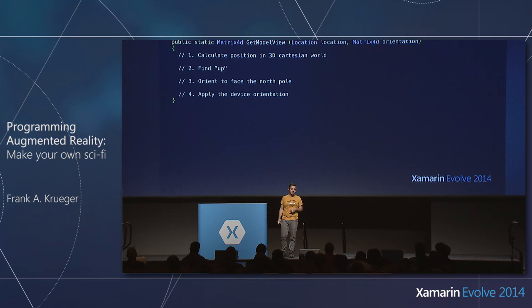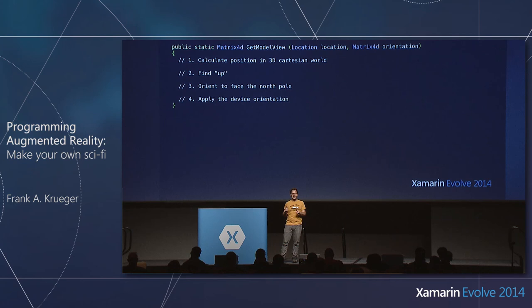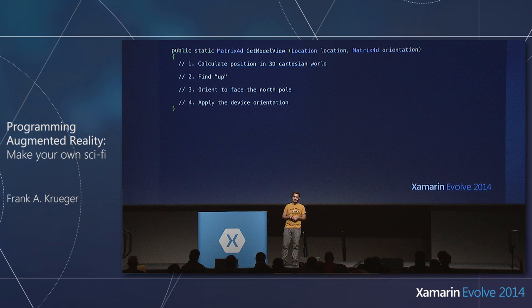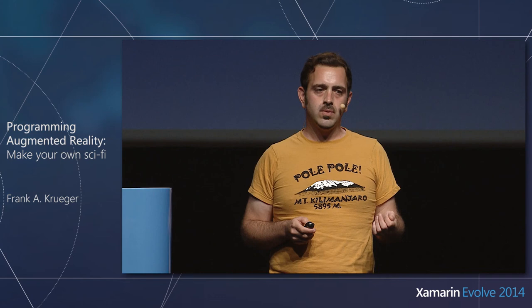Determining the model view matrix is a little bit tricky, so I'll break it into four parts. First, we'll walk through converting our spherical coordinate into a 3D Cartesian coordinate. Then we need to find the direction of up — if you're in the southern hemisphere, up is quite different than if you're in Canada. Then we orient ourselves to face the North Pole to have an absolute reference frame.